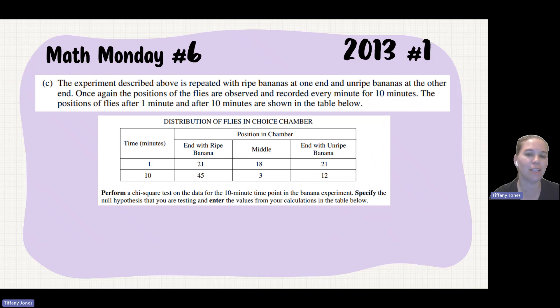Once again, the positions of the flies are observed and recorded every minute for 10 minutes. The positions of flies after one minute and 10 minutes are shown in the table. They're asking us to perform a chi-square test on the data and specify the null hypothesis as well as enter the calculation into a table. They've already given us a table to do this one.